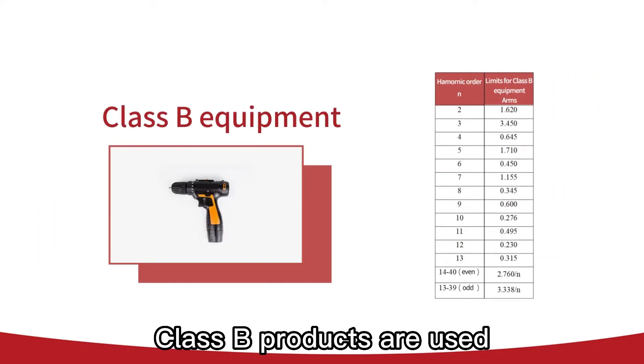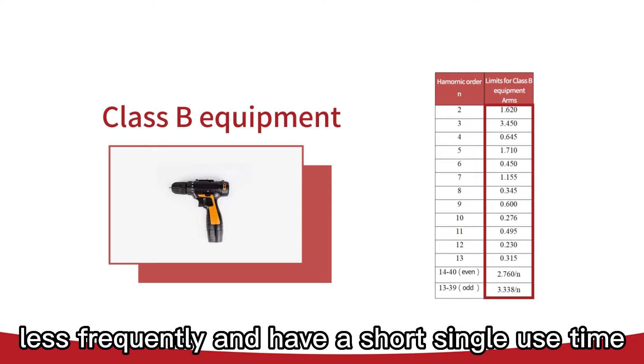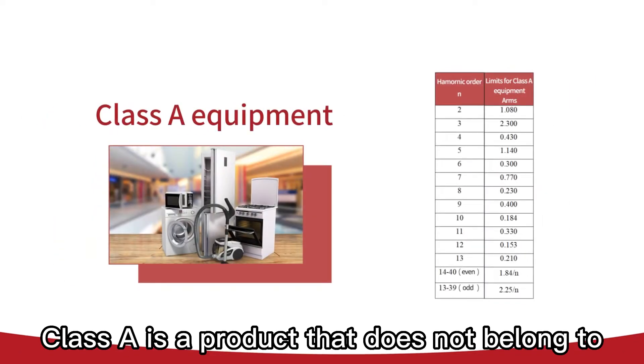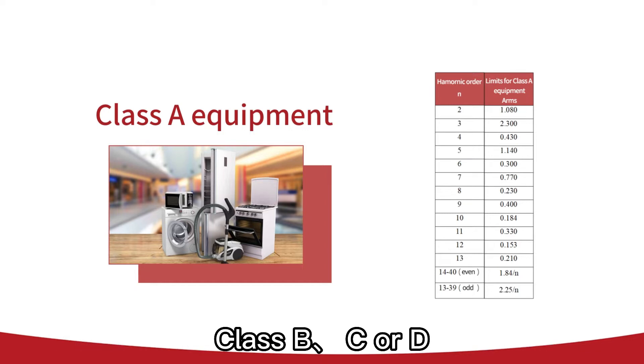Class B products are used less frequently and have a short single-use time, and the limit is the most relaxed. Class A is a product that does not belong to Class B, C or D.